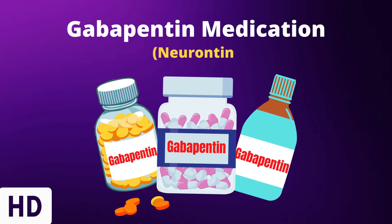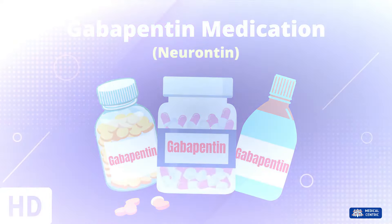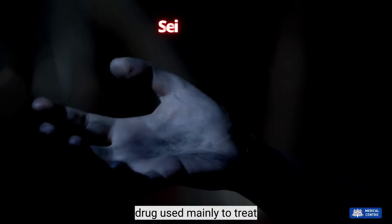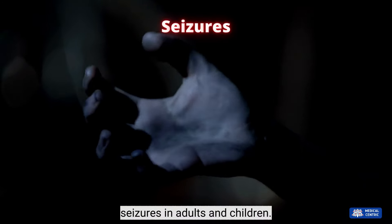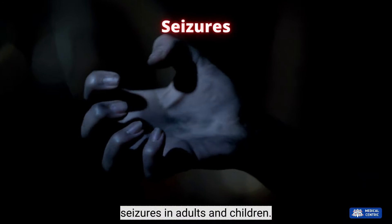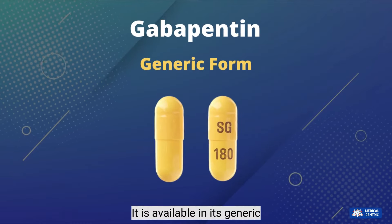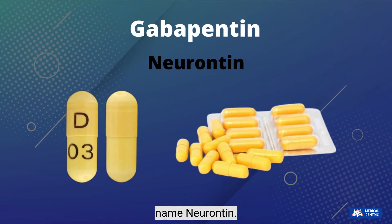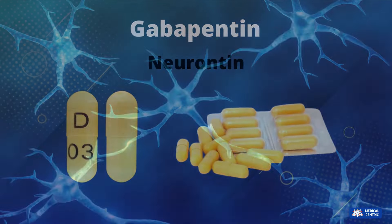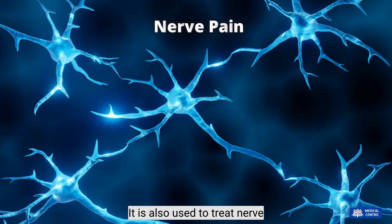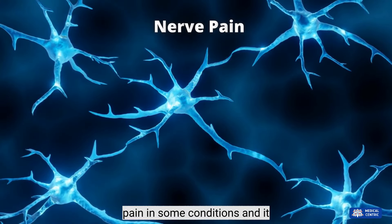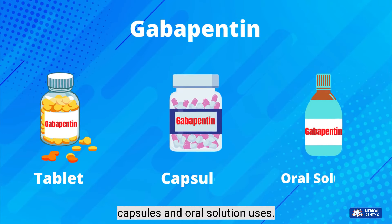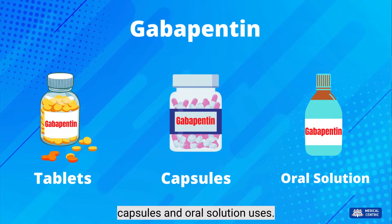Today's video topic is Gabapentin. Gabapentin is a prescription drug used mainly to treat seizures in adults and children. It is available in its generic form and also under the brand name Neurontin. It is also used to treat nerve pain in some conditions, and it comes in the form of tablets, capsules, and oral solution.